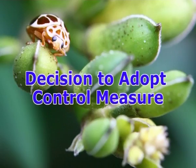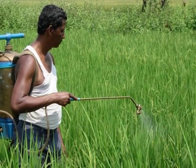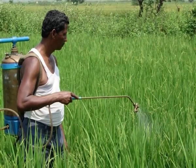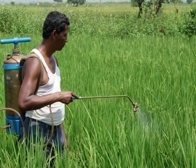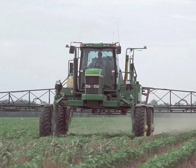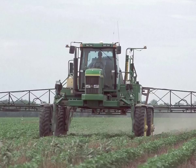Decision to adopt a control measure: as mentioned earlier, a control measure should not be started at the mere sight of the pests. It should only be done when the pest has crossed the economic threshold. Choice of the control measure: an integrated approach is the best method of pest control. However, if this is not possible for lack of expertise and facilities, insecticides may be employed.